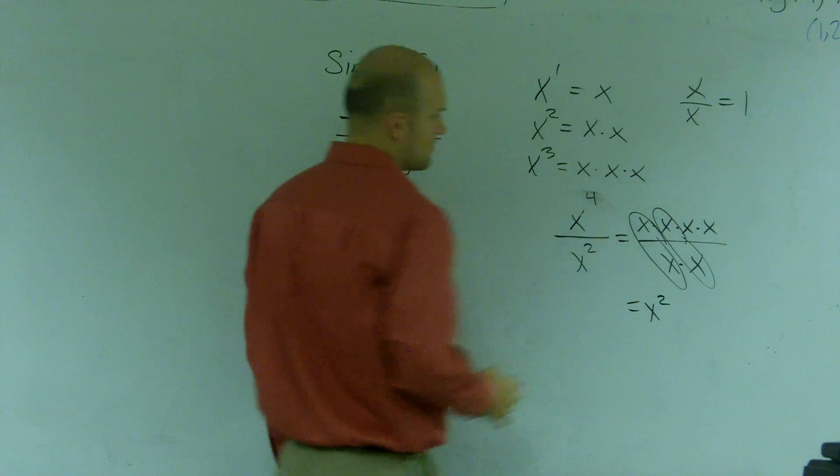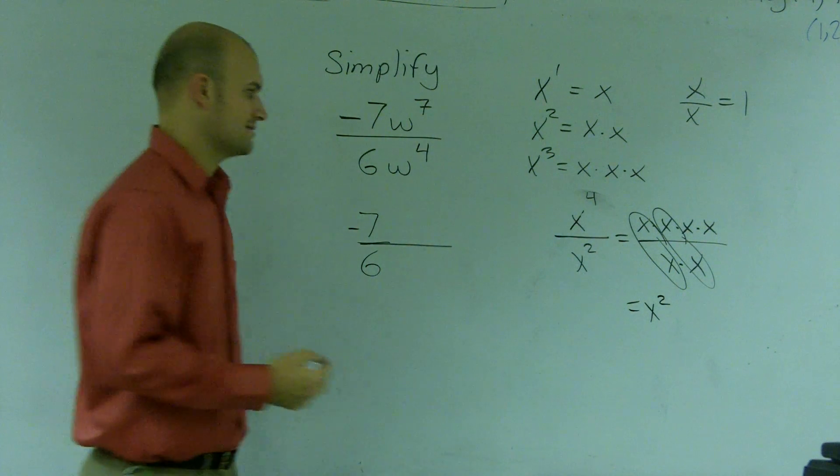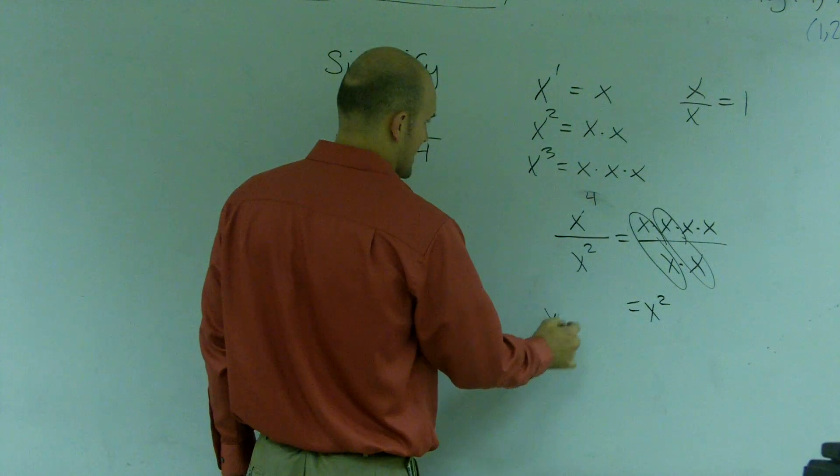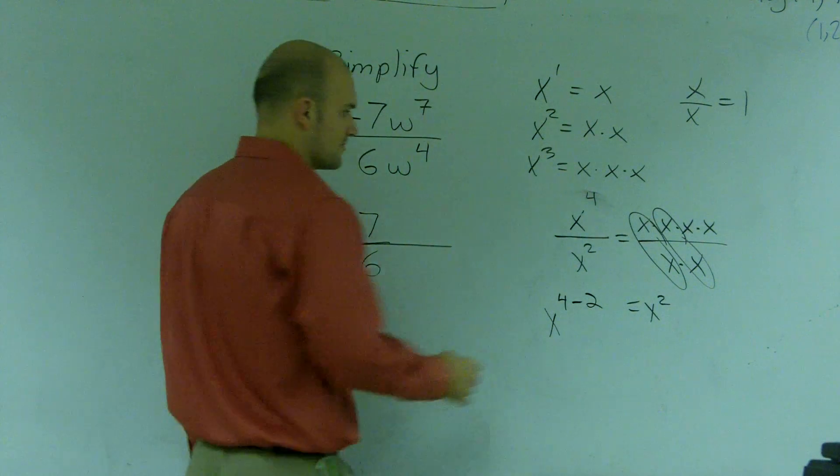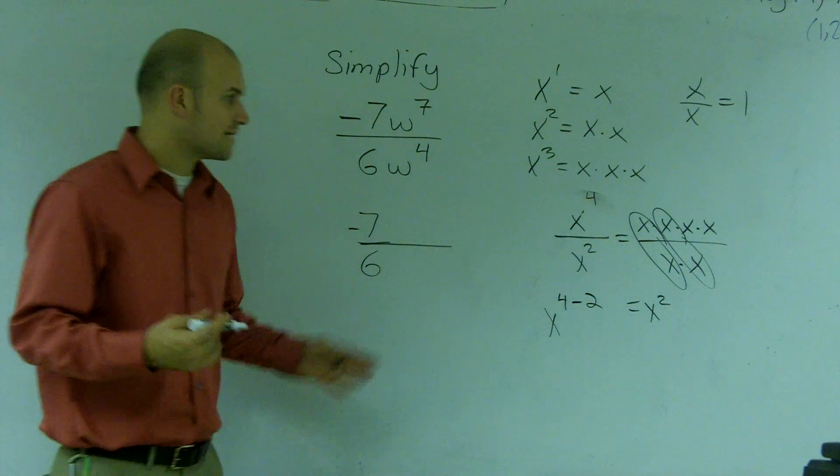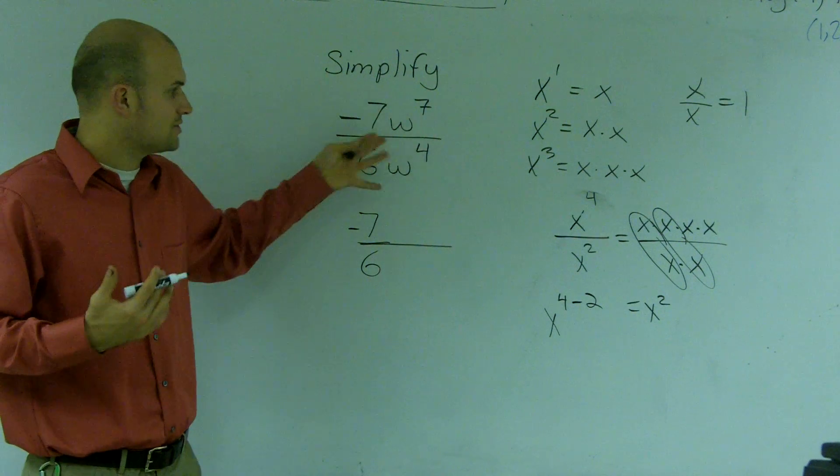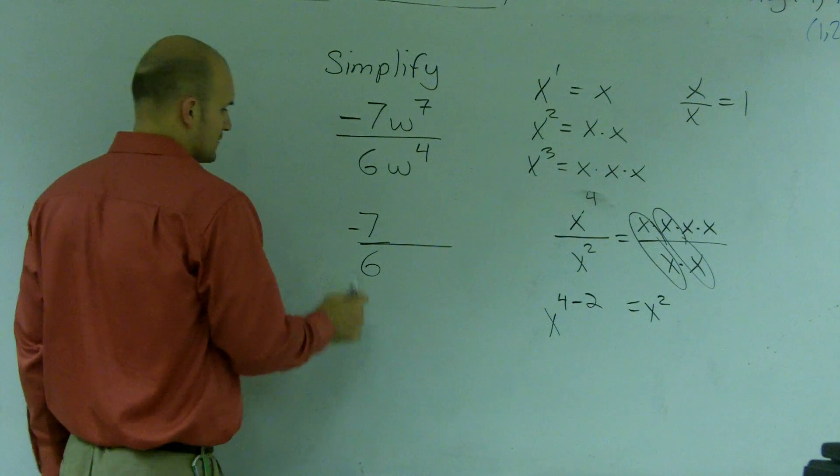And the way that we got that is another way to write this is x to the 4th minus 2, which equals x squared. So whenever you're dividing two exponents, what you do is you just follow the rule.